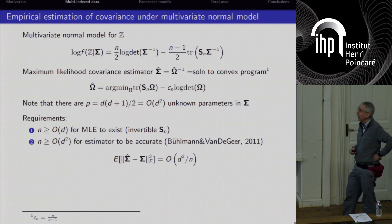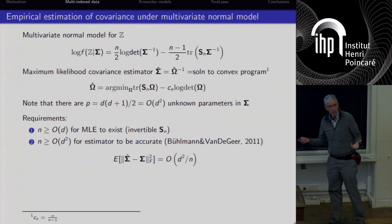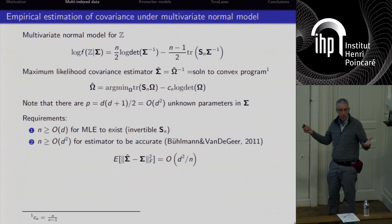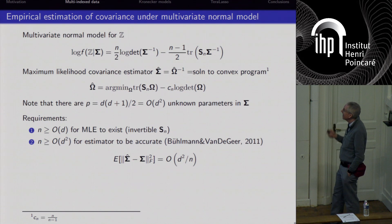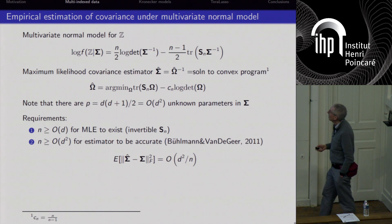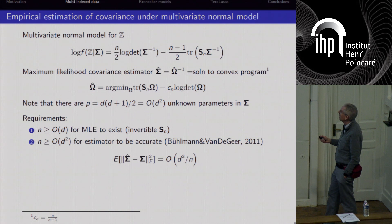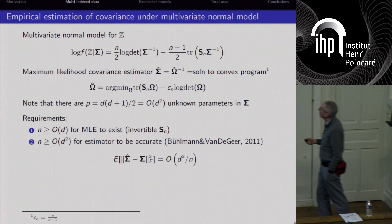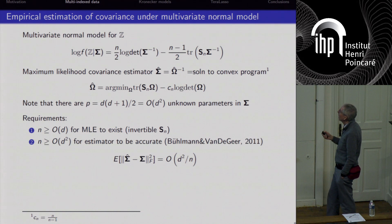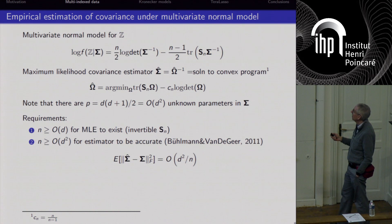A Gaussian model is arguably the simplest covariance model. The log of the multivariate Gaussian distribution involves the inverse covariance, a log determinant, and the trace of the inverse covariance times the sample covariance. The maximum likelihood covariance estimator is posed as minimizing the negative log likelihood over the set of sigma inverses omega — the precision matrix — which is a convex optimization.